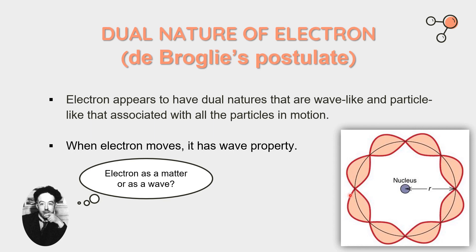In Bohr's atomic model, the electron moves in a fixed orbit circling the nucleus. But de Broglie showed that we can associate a wave with any moving particle — meaning when an electron moves, it has wave properties. Electrons therefore appear to have dual natures: wave-like and particle-like, associated with all particles in motion. According to de Broglie, when a particle moves, it has wave properties. In Bohr's model, the electron circles the orbit, but according to de Broglie, the electron moves with wave-like properties.